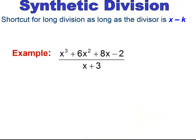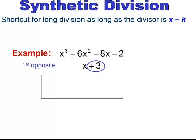Now we're going to do synthetic division. Synthetic division is a shortcut for long division, as long as your divisor is x minus or x plus a number — meaning the coefficient of your divisor for x has to be 1. If the coefficient in front of x is not 1, you cannot use synthetic division. How synthetic division works is you write a half box, then take your divisor — that x plus 3 — and give it the opposite. Since it's plus 3, you put minus 3 on the outside of the box. Whatever your divisor is, you always use the opposite.